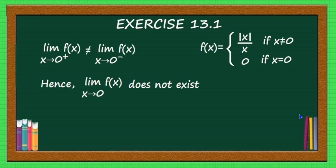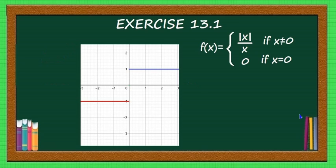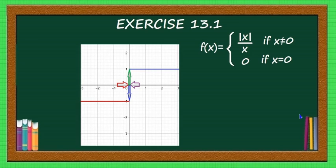If you see the graph of this function, it is like a signum function. When x is greater than 0, it is 1; when x is less than 0, it is minus 1; when x equals 0, it is 0. As x tends to 0 from the left side, f(x) tends to minus 1, and from the right side, f(x) tends to plus 1. The left-hand limit and right-hand limit are different, therefore the limit does not exist. With this, I will conclude this video. In the next video, let us continue with other problems. Thank you.